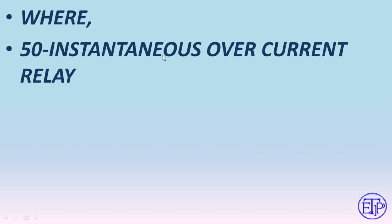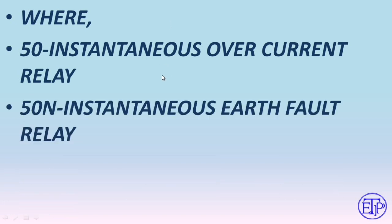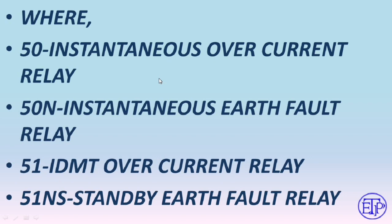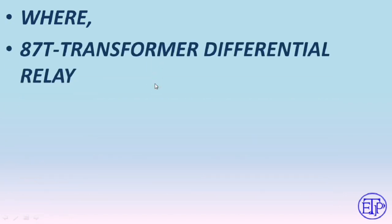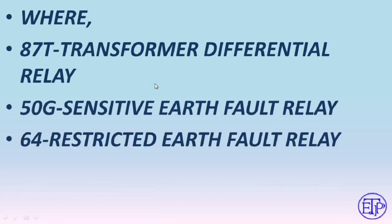Relay designations: 50 is instantaneous overcurrent relay, 50N is instantaneous earth fault relay, 51 is IDMT overcurrent relay, 51NS is standby earth fault relay, 87T is transformer differential relay, 50G is sensitive earth fault relay, and 64 is restricted earth fault relay.